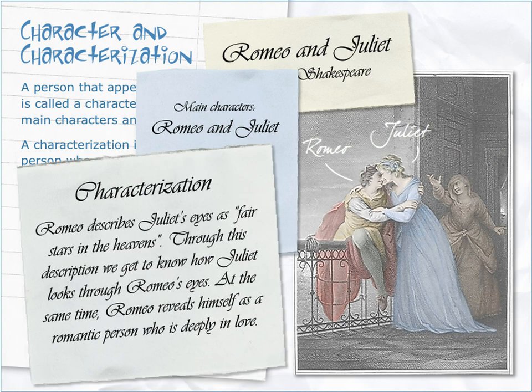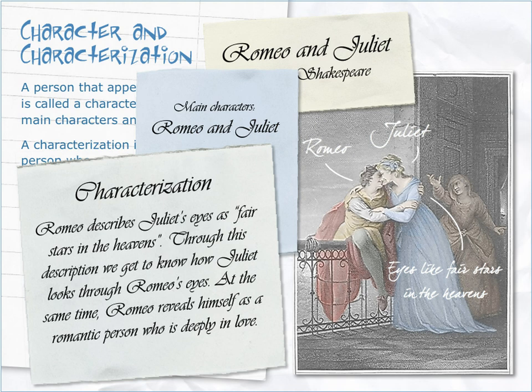In the balcony scene of Shakespeare's play Romeo and Juliet, Romeo describes Juliet's eyes as 'fair stars in the heavens.' Through this description, we get to know how Juliet looks through Romeo's eyes. At the same time, Romeo reveals himself as a romantic person who is deeply in love.